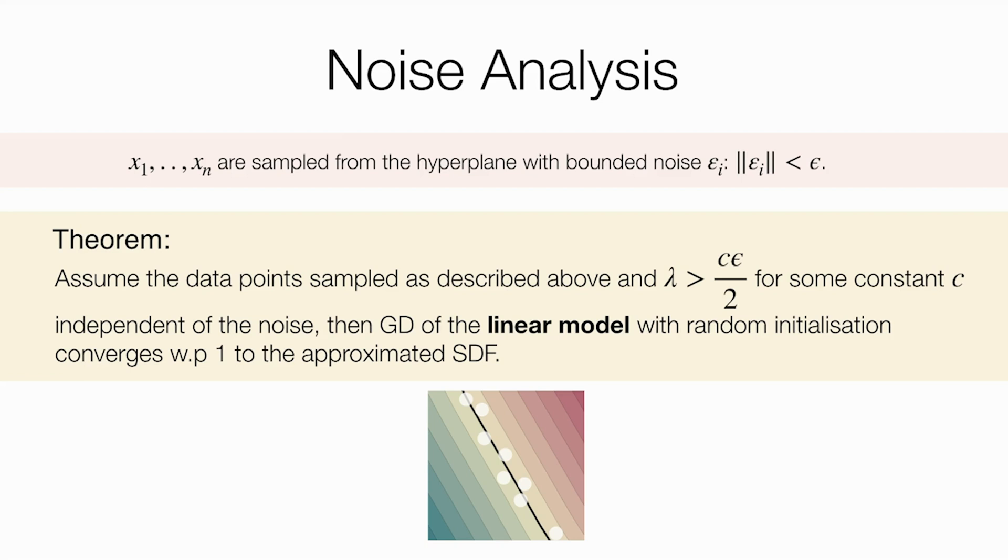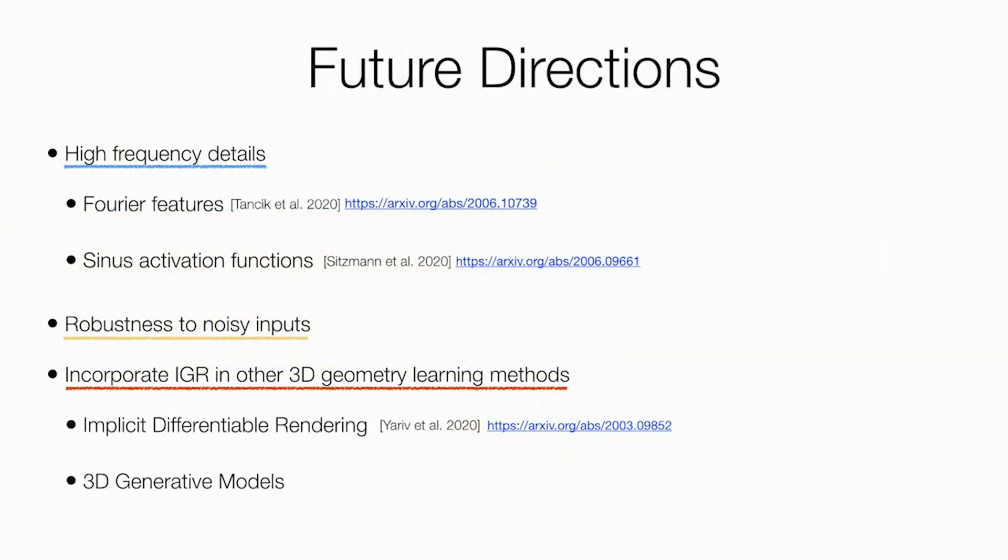Implicit neural representation has been an active field of research in the last year. Let us mention some interesting future research directions. The first challenge I would like to state is improving the reconstruction level of details. Few works observe that neural networks struggle to fit the high-frequency details in signals.